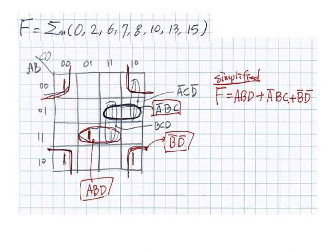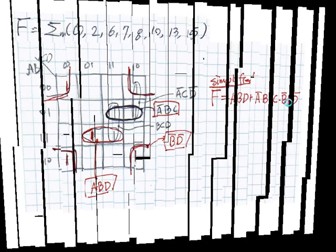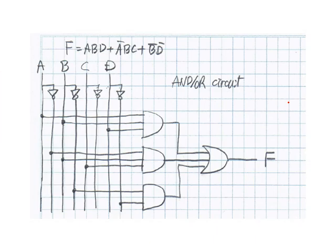Once we have the most simplified expression, we are going to draw the circuit. Here is the circuit: we use AND gates and OR gates. At the first level we use AND gates for all three product terms, and then those three AND gate outputs are OR'd together, which gives the boolean expression f. This is a circuit representation for f.